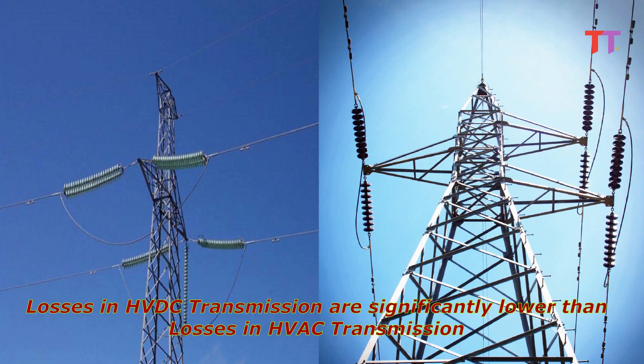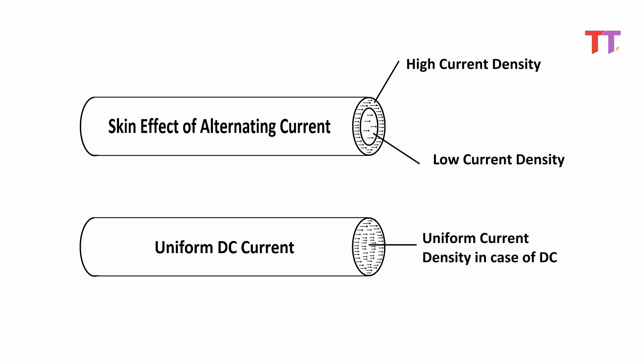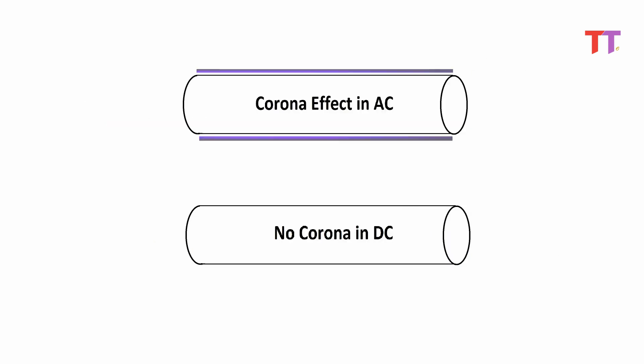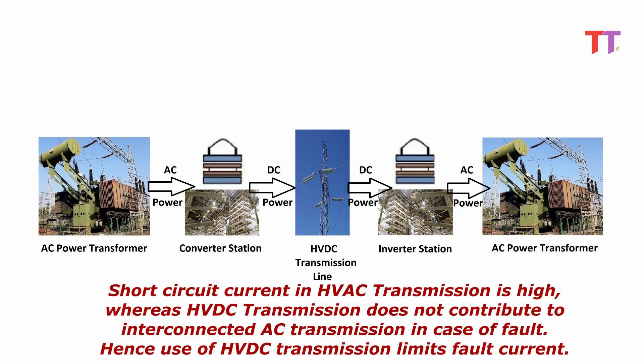Losses: Losses in HVDC transmission are significantly lower than losses in HVAC transmission. Skin effect is completely absent in HVDC transmission, and Corona losses are also lower in HVDC. Short circuit current: Short circuit current in HVAC transmission is high, whereas HVDC transmission does not contribute to interconnected AC transmission in case of a fault. Hence use of HVDC transmission limits fault current.